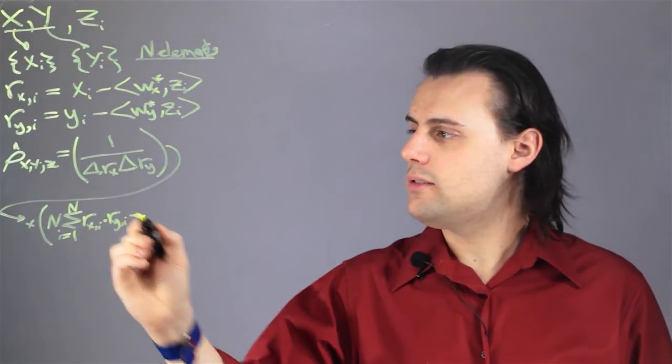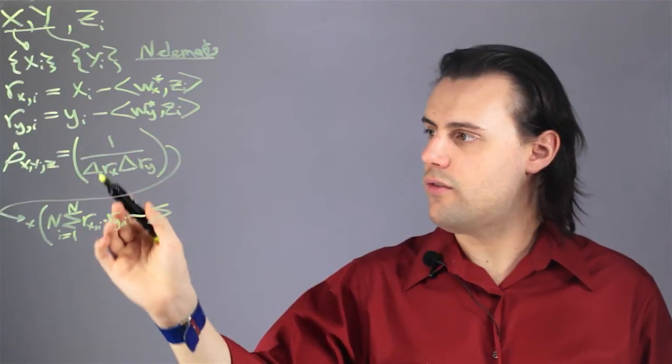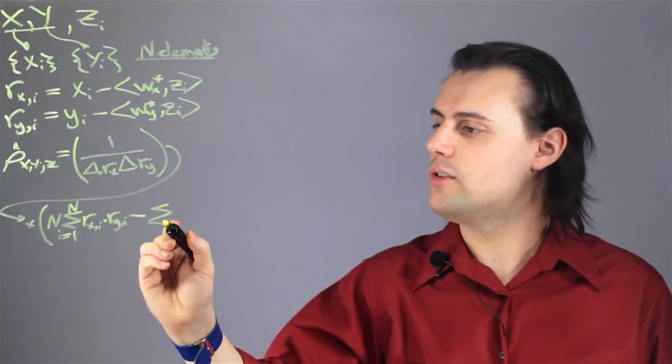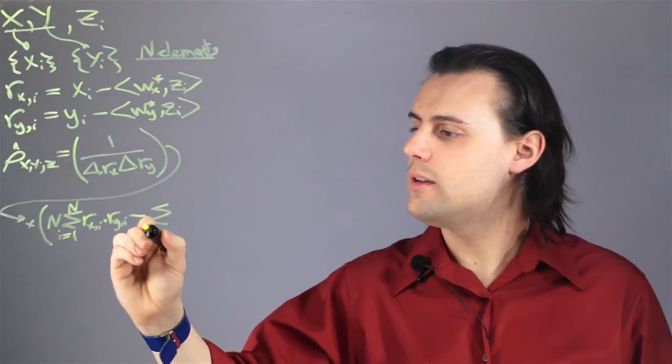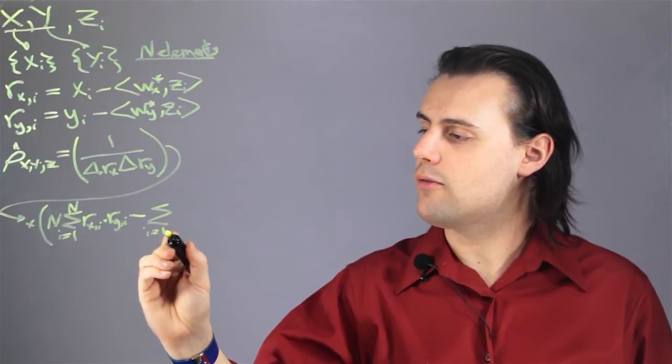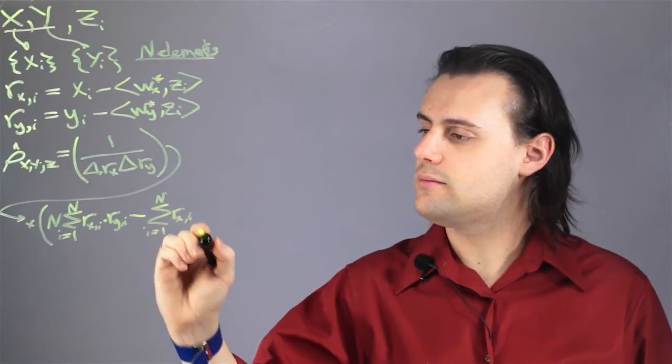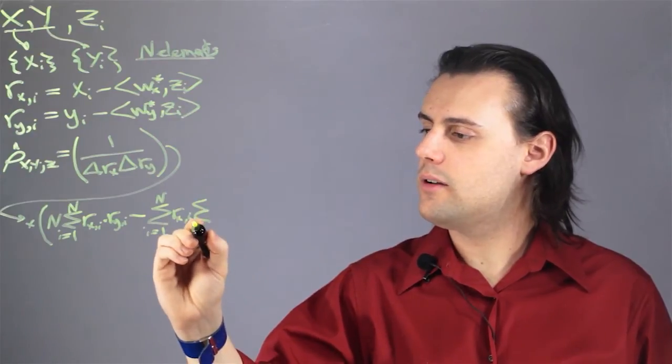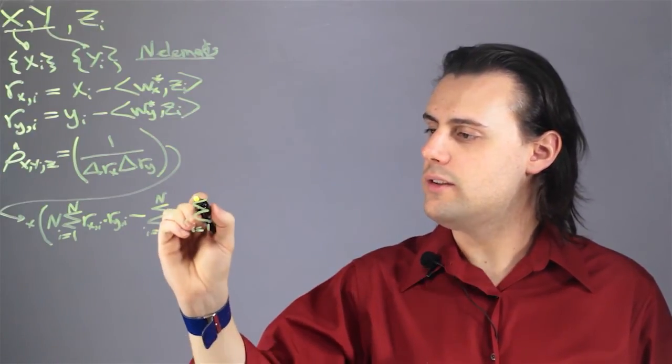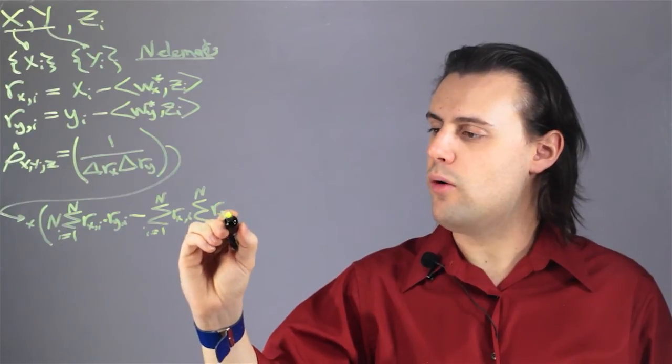minus the product of the sums for the corresponding residuals in x and y. So the sum going from i equals 1 to n of the residual in x times the sum, i going from 1 to n again, of the residual in y.